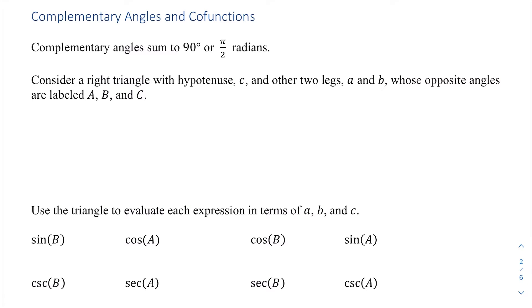Let's look at complementary angles and co-functions. Complementary angles sum to 90 degrees or pi over 2 radians.